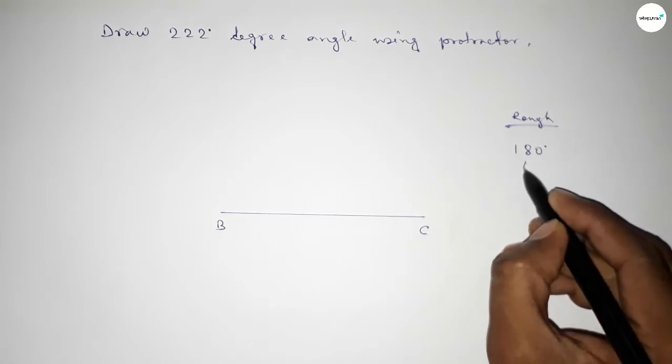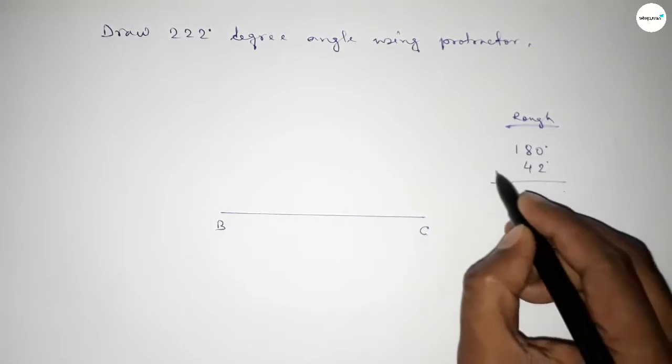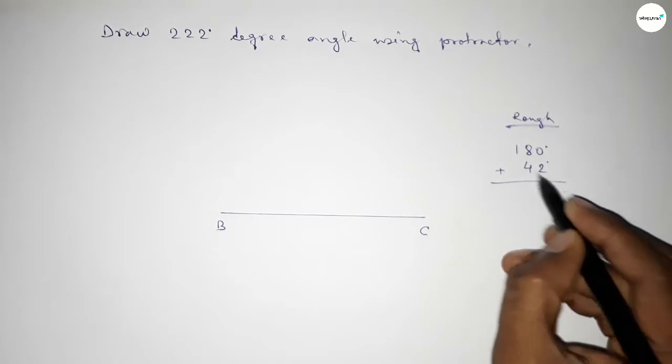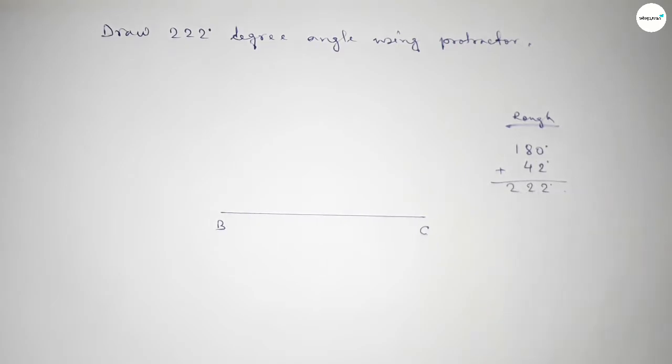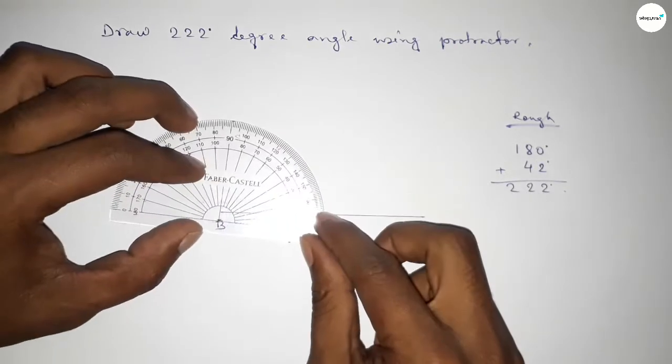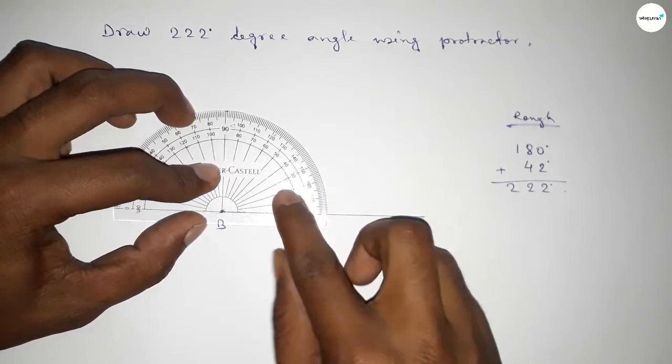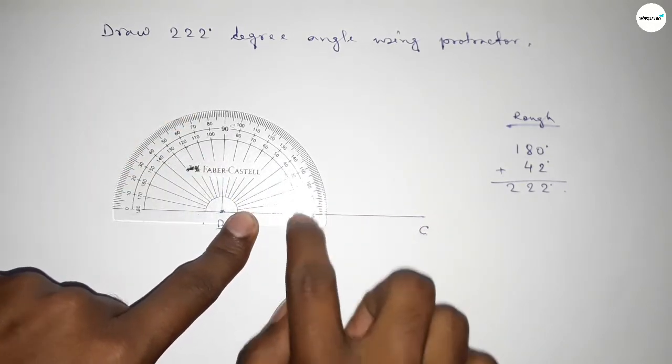First, we have to count 180 degrees. So putting the protractor on the point B by this way and counting 180 degrees.